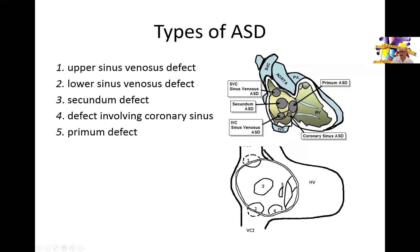Now to review the forms of atrial septal defects: we start from the top with the upper sinus venosus defect, seen high up in the atria, and then there can be a lower sinus venosus defect, seen very low, close to the insertion of the IVC into the right atrium. The third type, which is the most common, is the secundum defect — basically located in the middle — where there is a failure of maturation or meeting of the primum ridge with the secundum ridge from below.